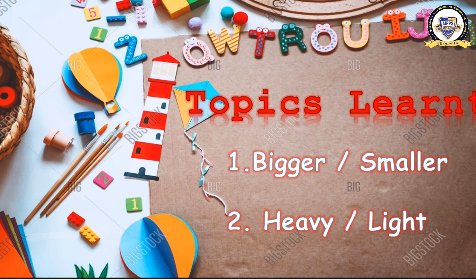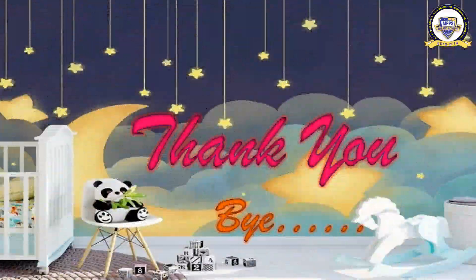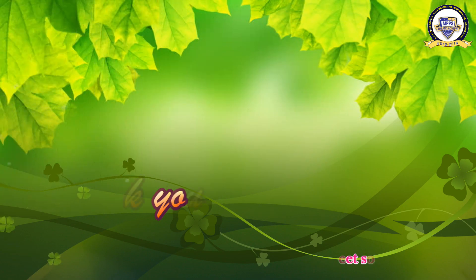You have come to the end of this topic. What we have learned today: we have learned two topics — bigger or smaller, and heavy or light. Bigger means large in size, smaller means less in size, heavy means having weight, light means having less weight. You have understood very well — practice it!